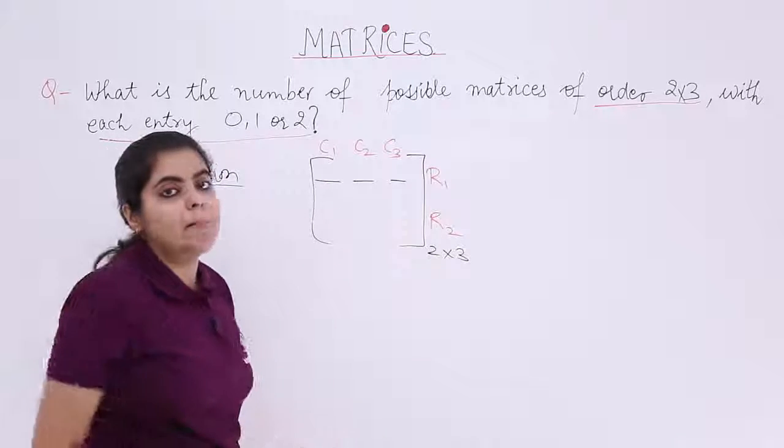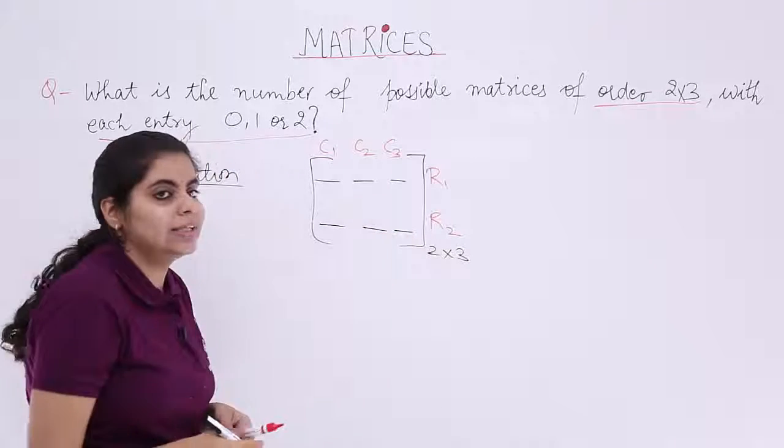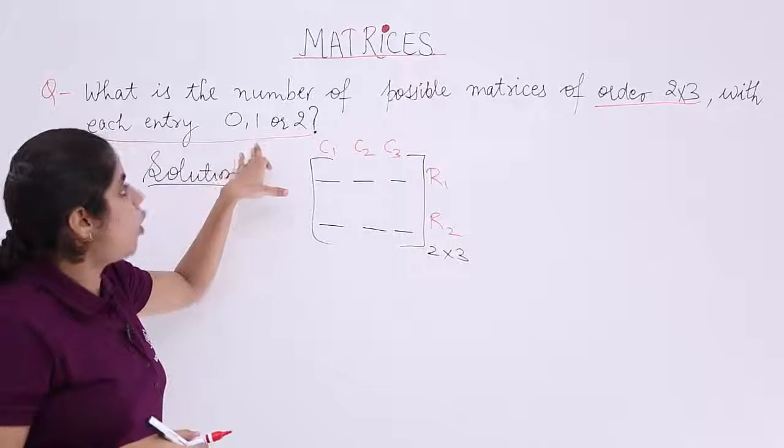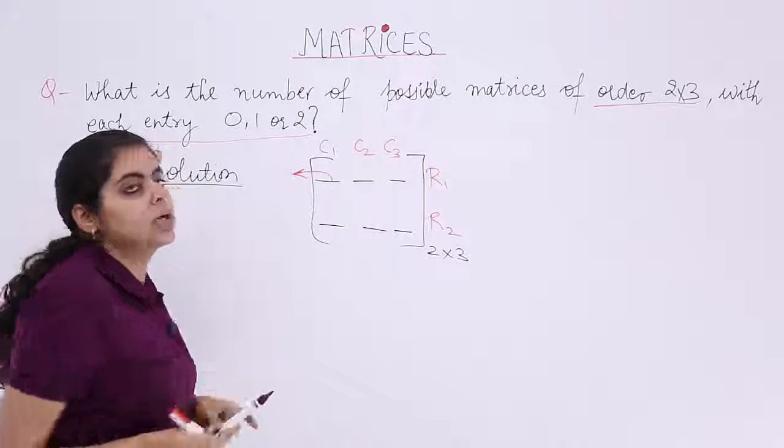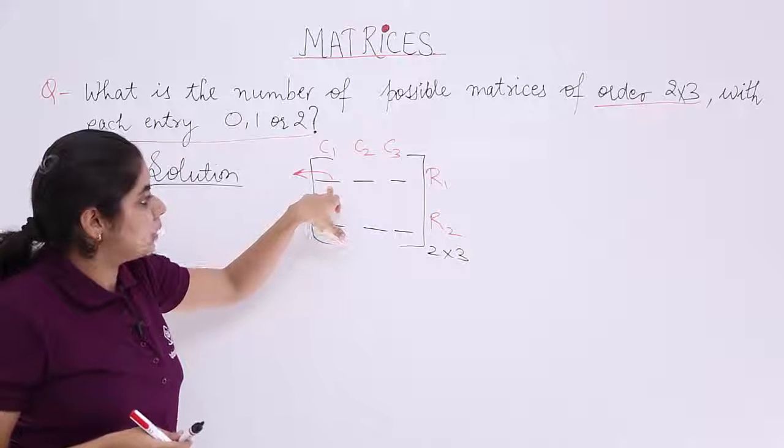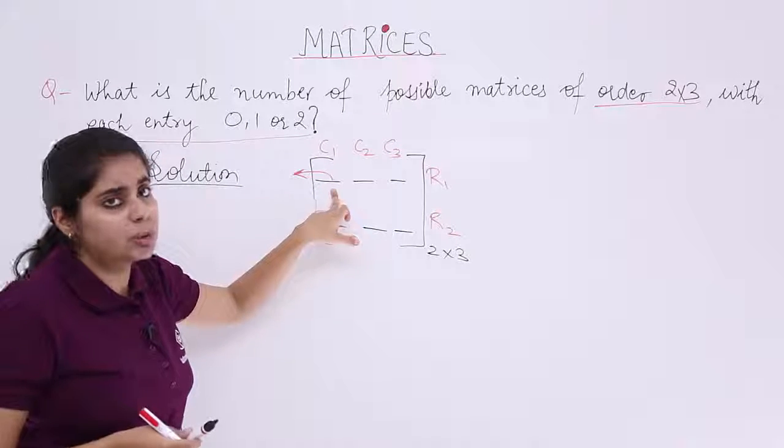Because my question tells me that each entry can be either 0 or 1 or 2. So that means how many elements can be placed in this position? This is position number 1.